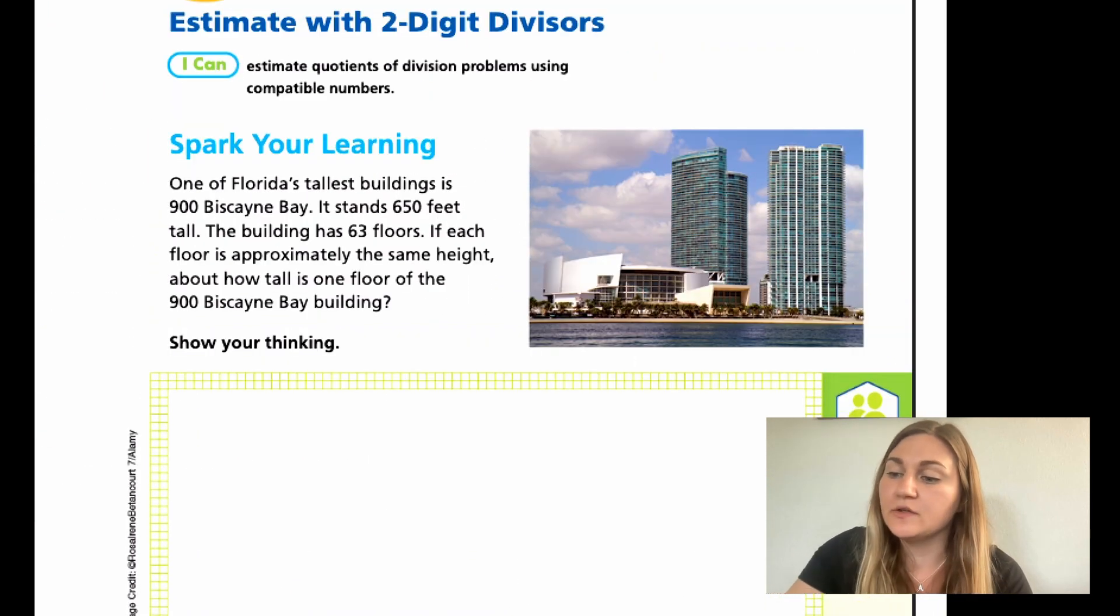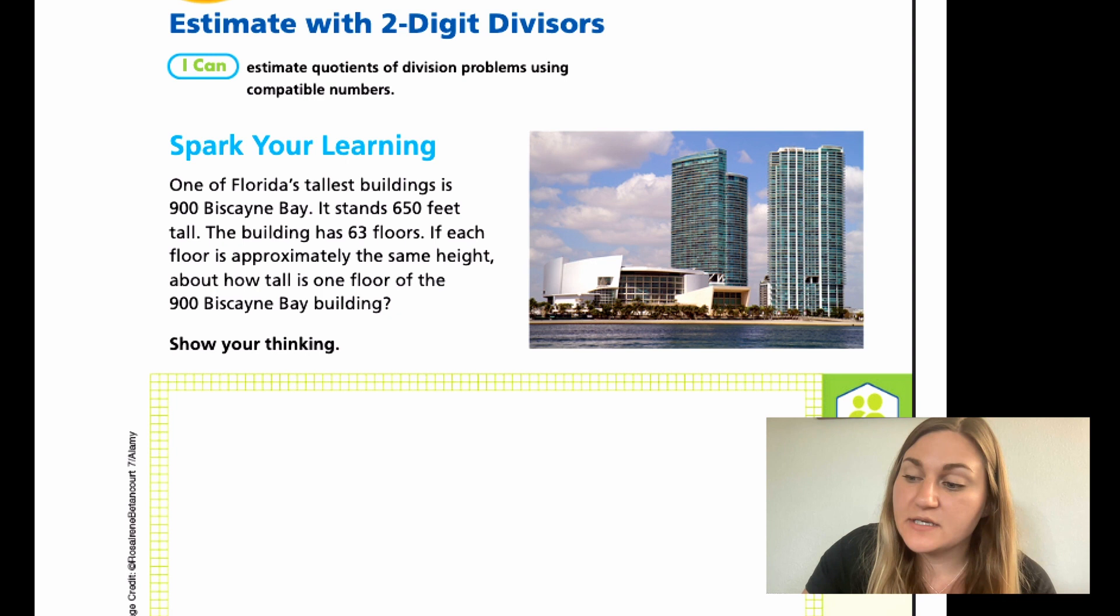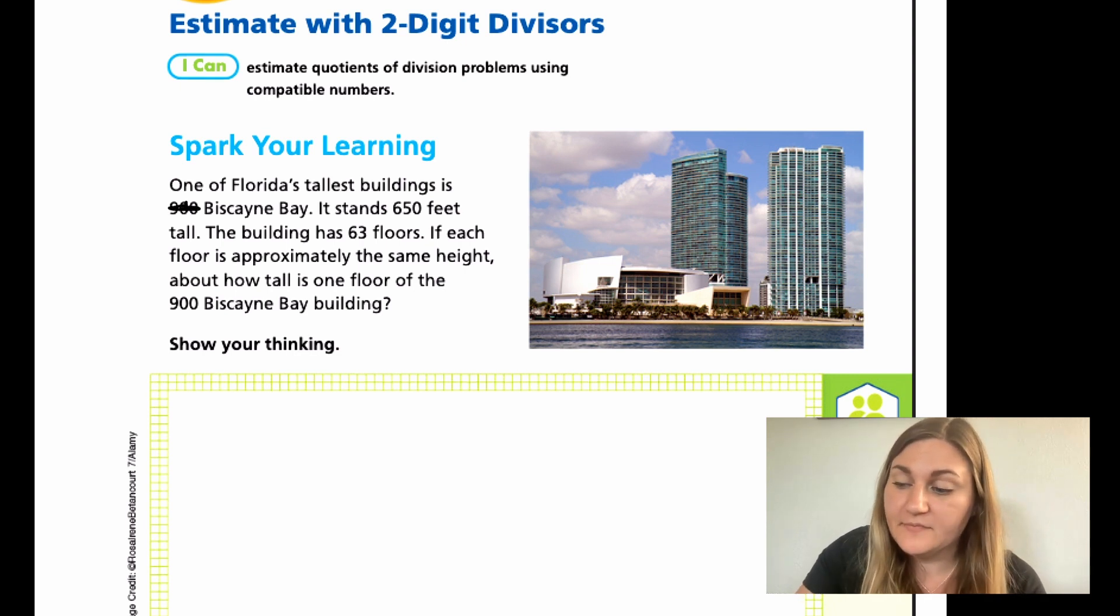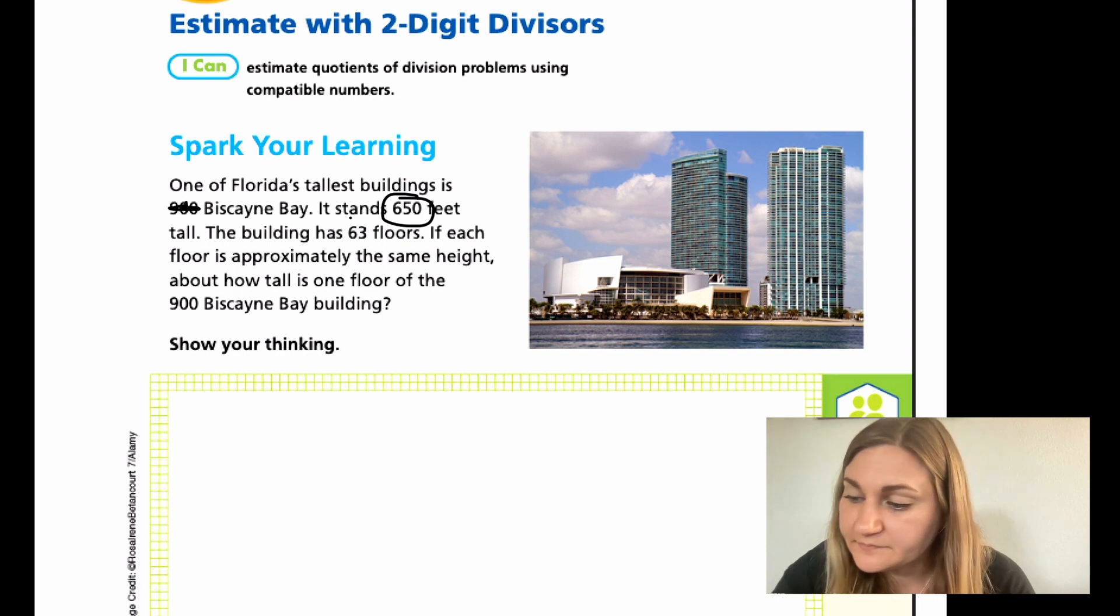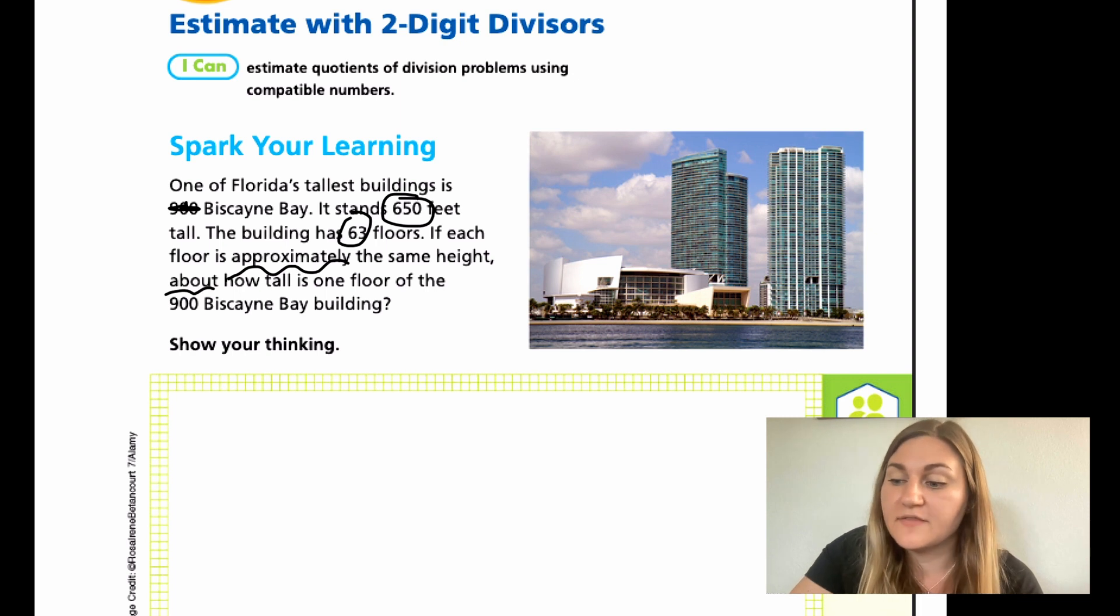Jumping into the lesson Spark Your Learning, this is one of Florida's tallest buildings, 900 Biscayne Bay. So that 900 is either the address or description of the building. It stands 650 feet tall. The building has 63 floors. If each floor is approximately the same height, about how tall is one floor of the 900 Biscayne Bay building? And again, that 900 doesn't matter.